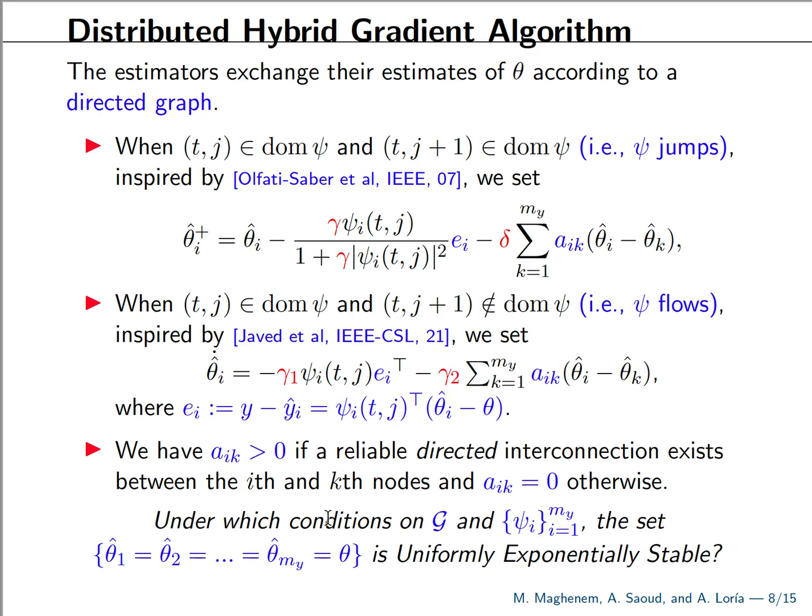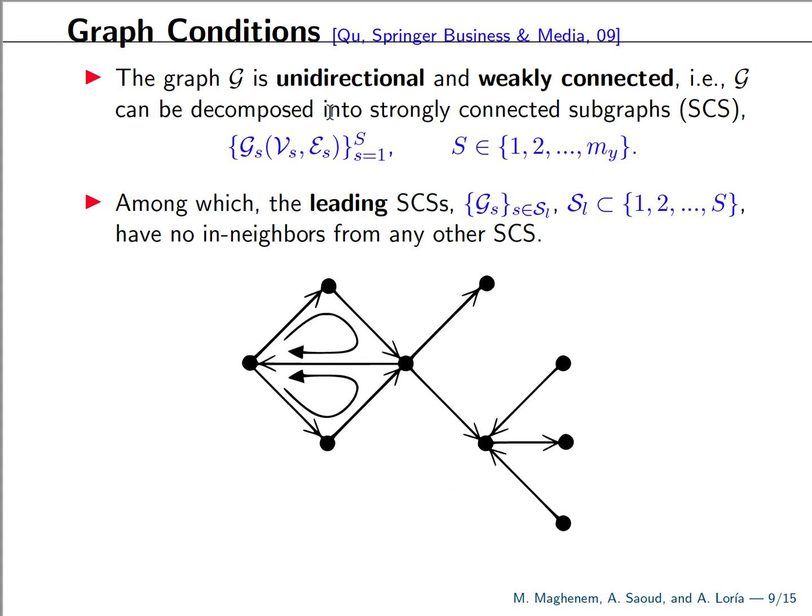And our problem now is what are conditions on the graph tailored to the sequence of regressors that allows us to guarantee uniform exponential stability of the estimation errors. The graph conditions are the following. So we assume that our graph is weakly connected, is unidirectional and weakly connected. Weakly connected meaning that if we ignore the directions of the interconnections, we end up with the graph that is connected. And we also know that every weakly connected graph can be decomposed into strongly connected subgraphs. And among the strongly connected subgraphs, we identify the leading strongly connected subgraphs. So as here in this picture, we can see that this subnetwork of four agents form a strongly connected subgraph, because there is a path from any agent to any other agent. And it's leading strongly connected component because it does not provide information, it does not receive information from the other agents, it only gives. So it's a leading component.